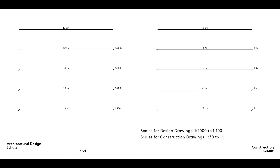The boundary between design drawings and construction drawings lies somewhere between the scales of 1 to 100 and 1 to 50. Drawings on a scale of 1 to 2000 to 1 to 100 are used in the design process and to illustrate the completed building. Drawings on a scale of 1 to 50 to 1 to 1 are used to explain the construction process and provide the information required to erect a building.